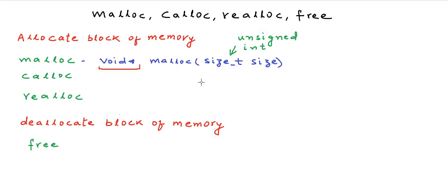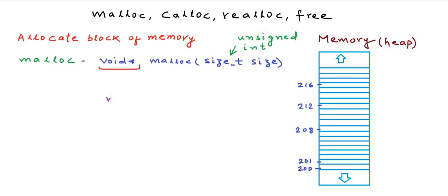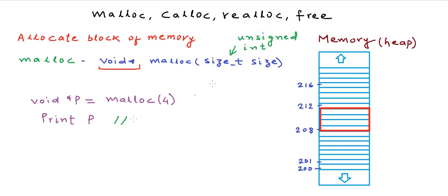Using malloc, you say: give me a block of memory with this many bytes. Let's say the heap section of memory has bytes starting at address 200, each partition being one byte. If we make a call to malloc for four bytes and store the returned address in a void pointer variable p, and the allocated block starts at address 208, then printing p will output 208.